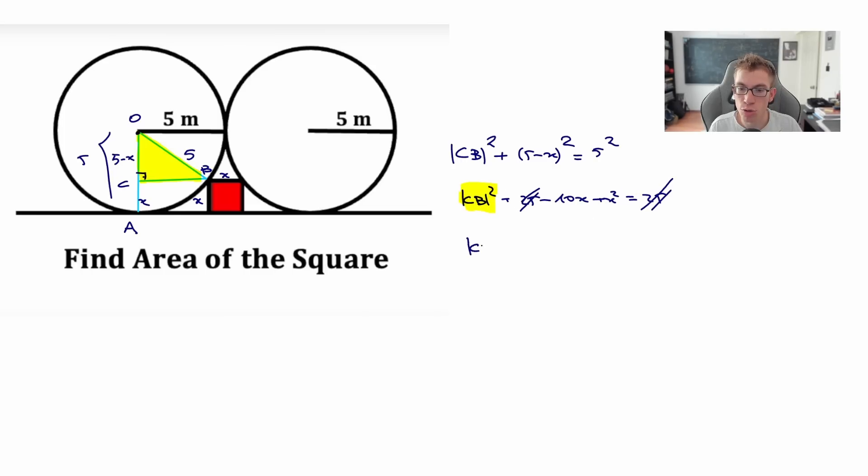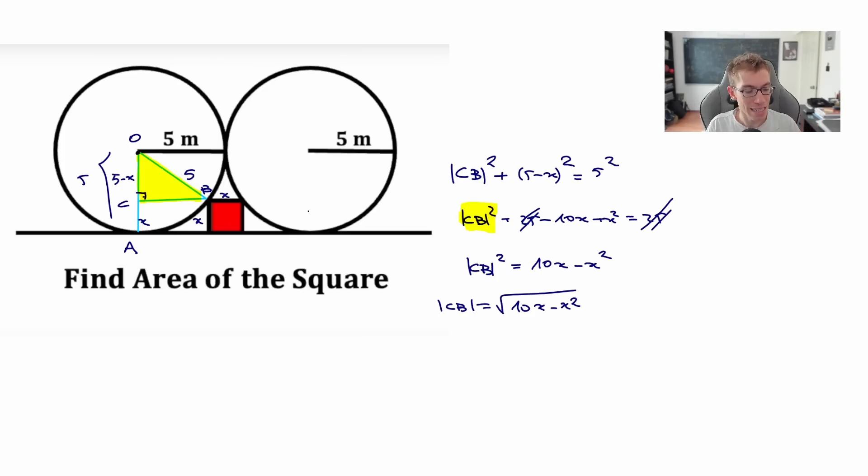O zaman CB'nin karesine gelecektir 25 eksi 10x artı x kare eşittir 25. Şu 25'leri silelim. CB'nin karesi neye eşit gelir? Yana atıyorum - CB'nin karesi o zaman 10x eksi x karedir. O zaman CB uzunluğuna gelecektir kare kök aldık. Tabii ki burada uzunluk pozitif olacağı için artılı olanı alıyorum - mutlak değerli çıkacaktır. Pozitif olanı aldık: kök içerisinde 10x eksi x kare.